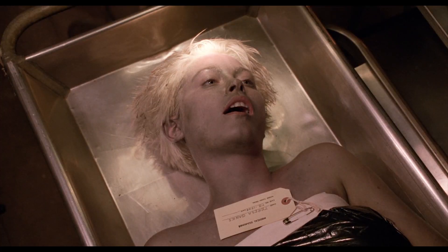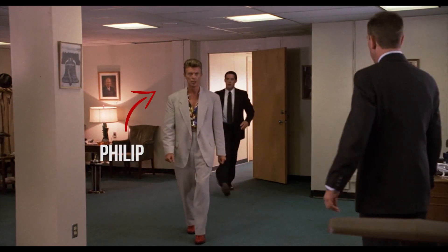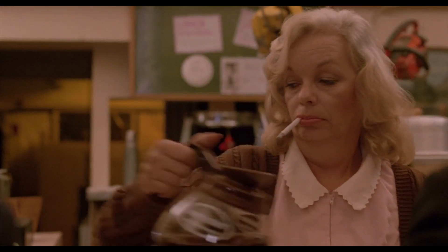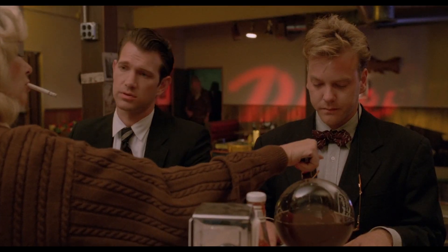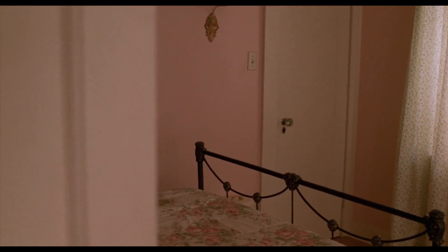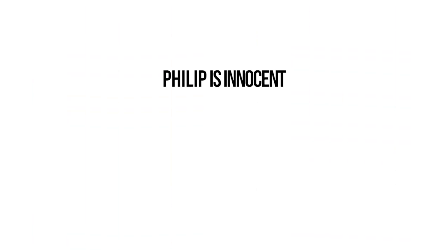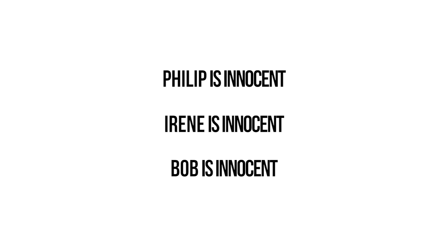A young girl named Teresa Banks has died. Again, we have three suspects. Our first suspect is Philip, who used to be an FBI agent before he suddenly and mysteriously disappeared. Our second suspect is Teresa's boss from the cafe she worked at — her name is Irene. Our last suspect is Bob, who we first see hiding in a young girl's room. We want to find out whether Philip is innocent, whether Irene is innocent, and whether Bob is innocent. These statements are atomic propositions represented by the propositional letters P, I, and B.